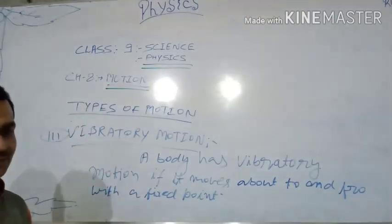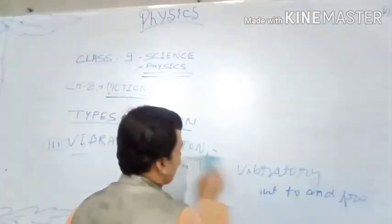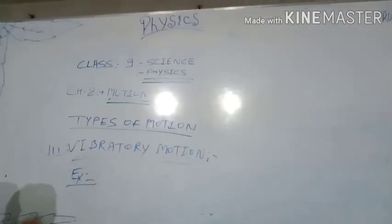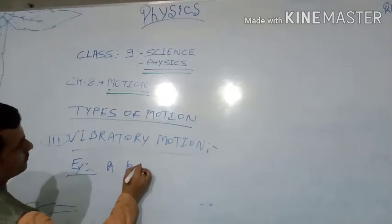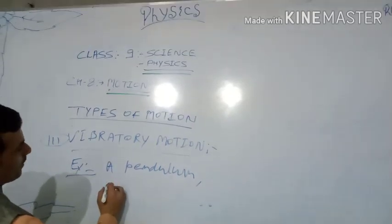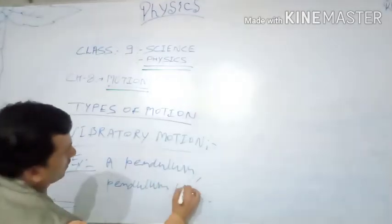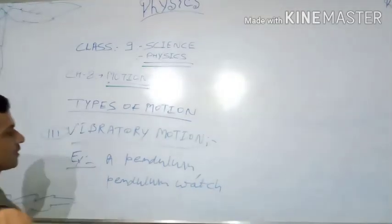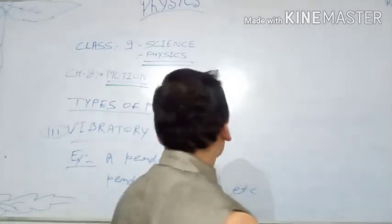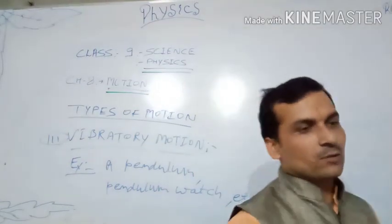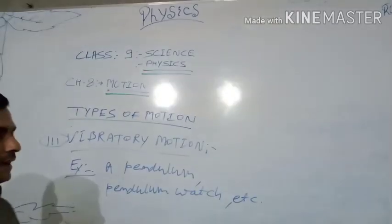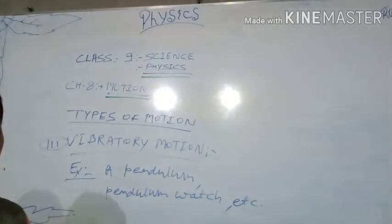For example, a pendulum watch. So we have learned the types of motion: circular motion, linear motion, and vibratory motion. Please do your homework, learn all these terms. Thanks.